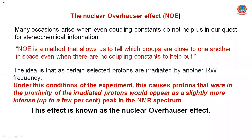We start with the Nuclear Overhauser Effect (NOE). This is an experiment we do for NMR spectroscopy for the differentiation between geometrical isomers as well as stereochemical isomers — meaning optically active compounds or enantiomers. The key question is: when do we use the NOE experiment and what is the effect, what is the benefit?